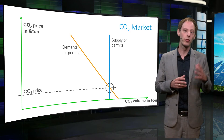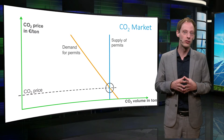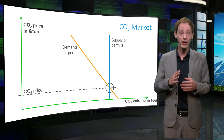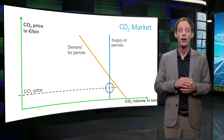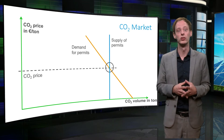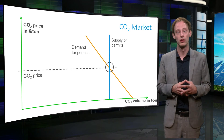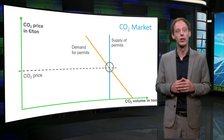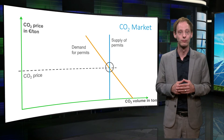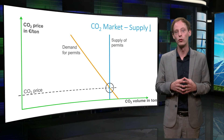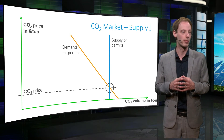When demand for permits is high — in times of economic growth, for instance — the demand curve shifts to the right, and the market price goes up. Reversely, during a recession, the demand curve shifts to the left, and the price goes down. And the supply curve moves to the left when the government lowers the emissions cap.